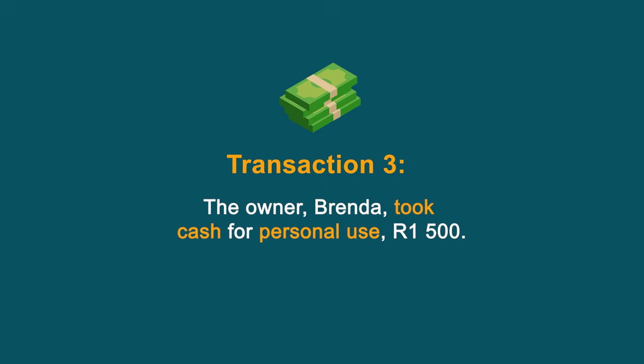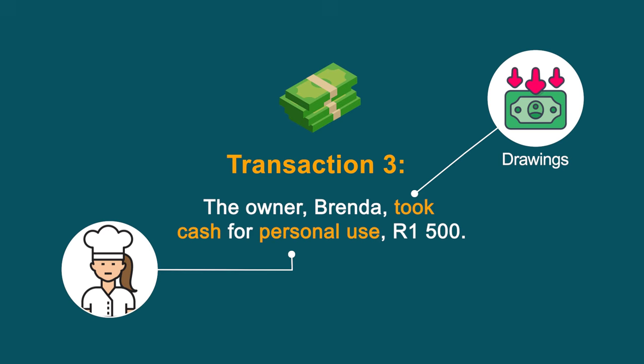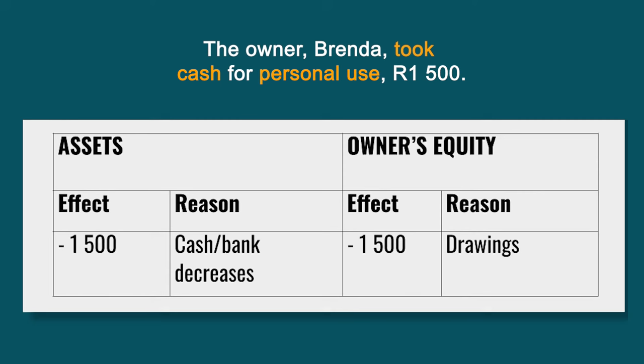Transaction three: The owner Brenda took cash for personal use — R1,500. Remember, stop, evaluate, and move on. In this example we have personal use. Money was deducted from the current bank account of the business because the owner took cash for personal use. When the owner took money from the business's bank account for her personal use, the asset Cash or Bank decreases by R1,500.